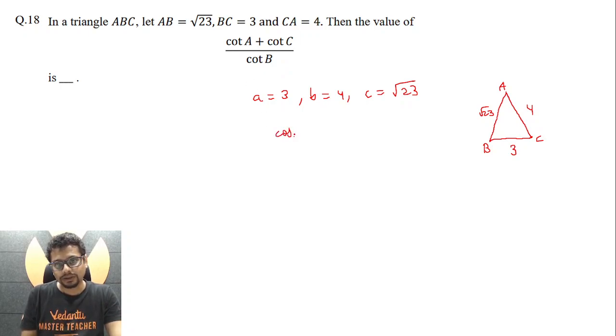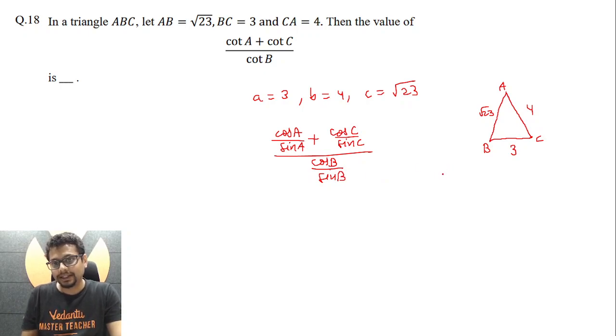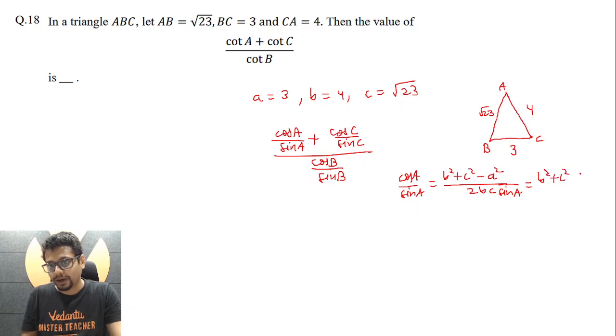So cot A is essentially cos A / sin A. This becomes (cos A / sin A + cos C / sin C) / (cos B / sin B). Now cos A is essentially (b² + c² - a²) / 2bc. And what about cos A by sin A? So let me write sin A here. So I can write this as (b² + c² - a²) / 2bc sin A. It's like four times area of the triangle which I am representing as delta. So half bc sin A is delta, so 2bc sin A is 4 delta.